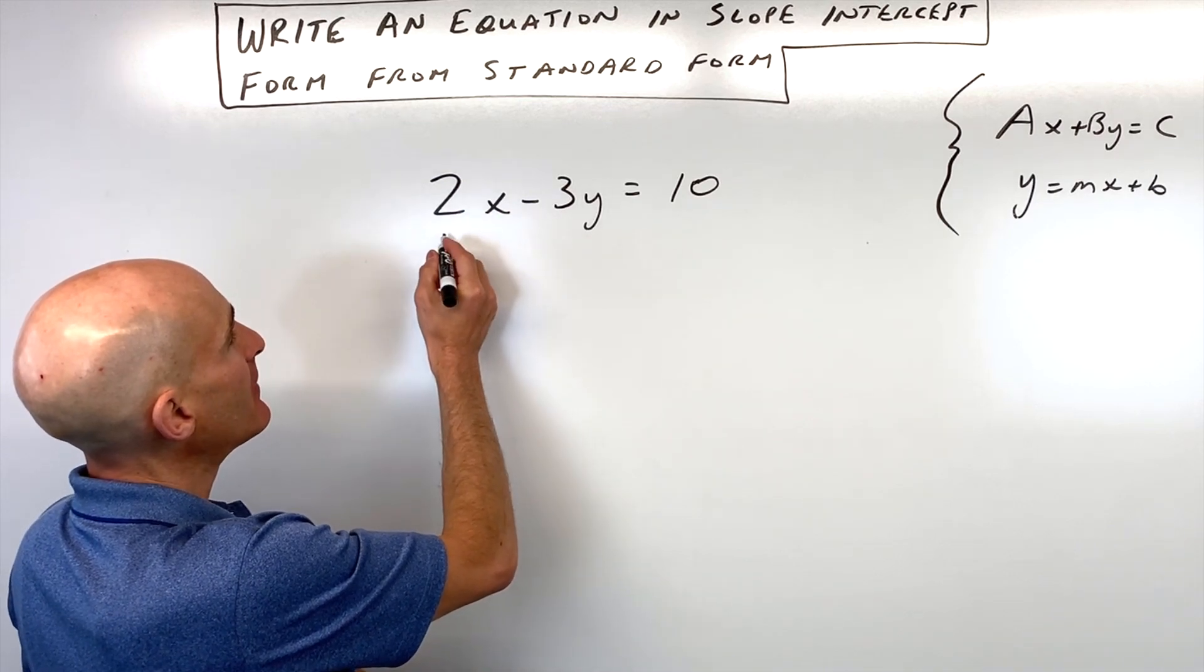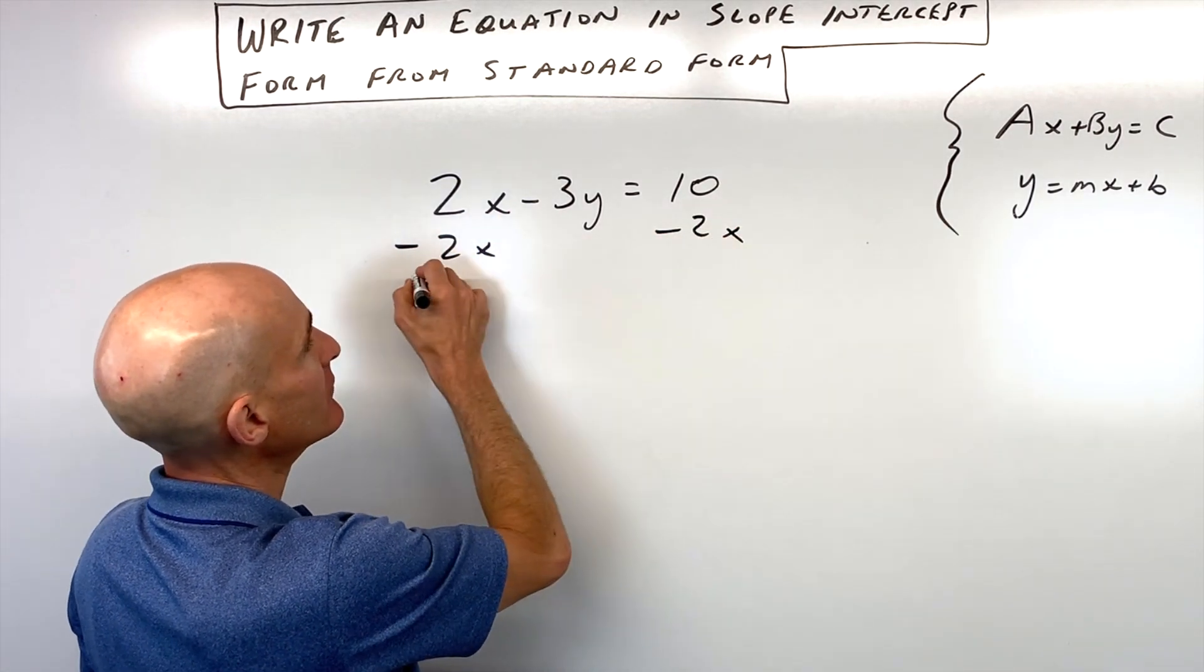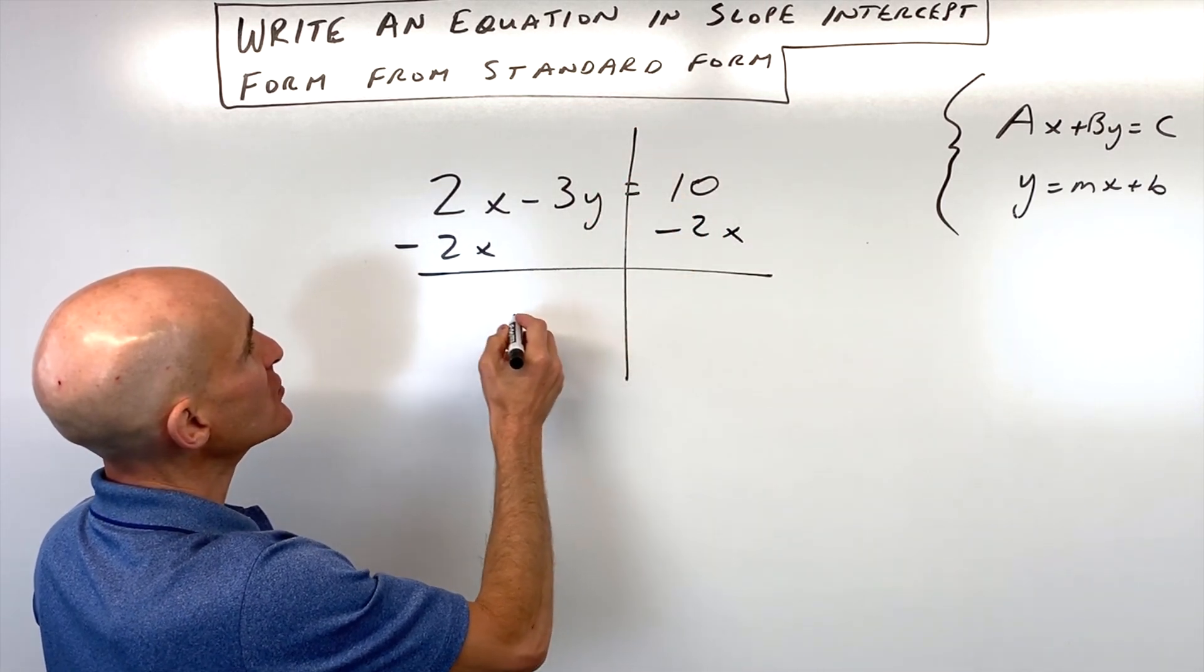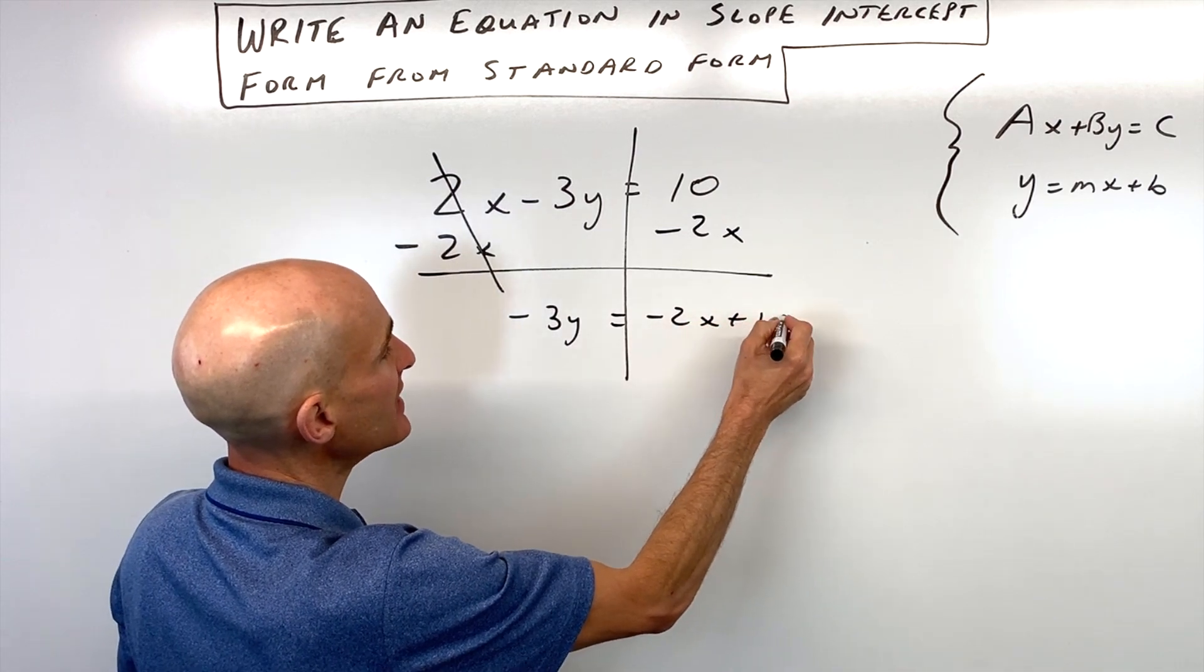So to do that, instead of 2x, we're going to subtract 2x from both sides of the equation. And so you can see these are going to cancel. We've got negative 3y equals negative 2x plus 10.